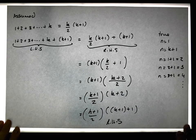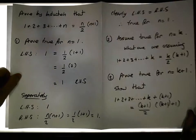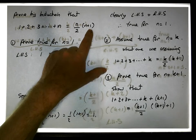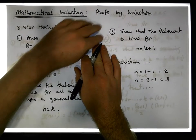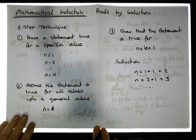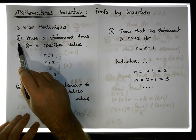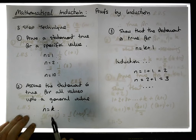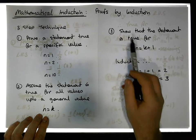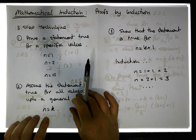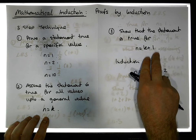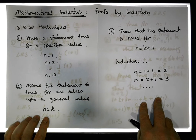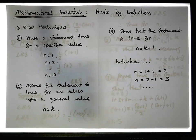This particular proof has shown that the sum of the first n values is equal to n over two times n plus one. To reflect again: proofs by induction are a three-step process. We prove the statement true for a particular value, we then assume the statement true for all values up to a specific value k, and then the inductive step is to show that if we extend up to k plus one, that's also true — and by induction, we've shown it's true for all values.